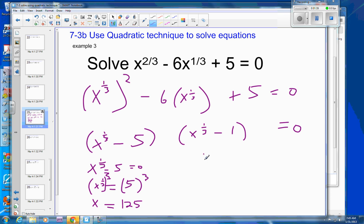Now I can do the other side. So again, x to the one-third minus 1 equals 0. So x to the one-third equals 1. And then we're going to cube both sides to get x by itself. And so x is equal to 1.